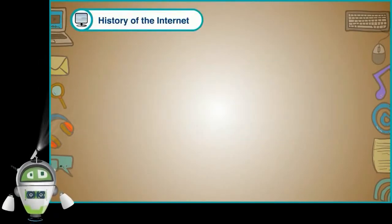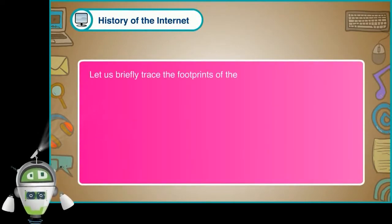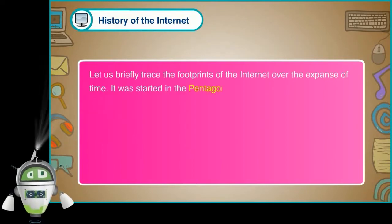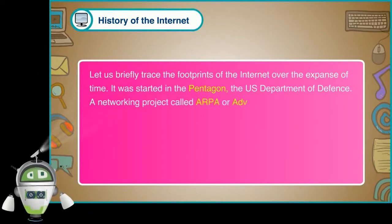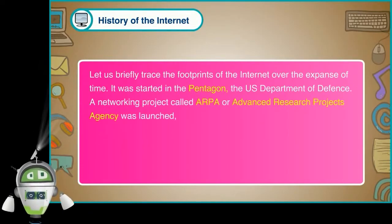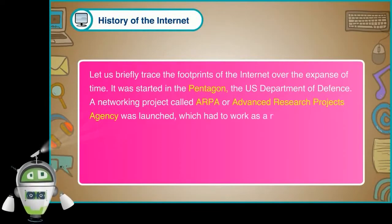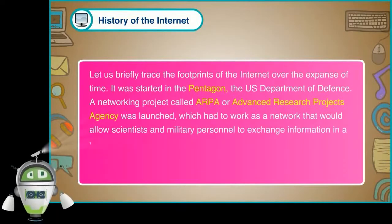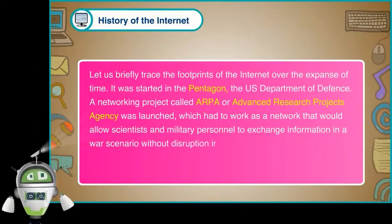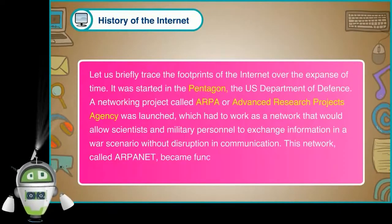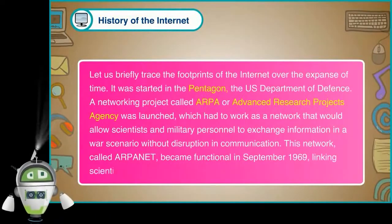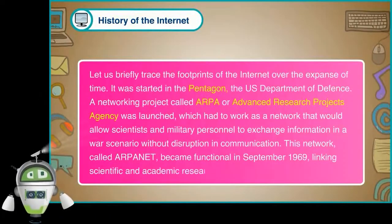History of the Internet. Let us briefly trace the footprints of the internet over the expanse of time. It was started in the Pentagon, the US Department of Defense. A networking project called ARPA, or Advanced Research Projects Agency, was launched, which had to work as a network that would allow scientists and military personnel to exchange information in a war scenario without disruption in communication. This network is called ARPANET. It became functional in September 1969, linking scientific and academic researchers in the United States.